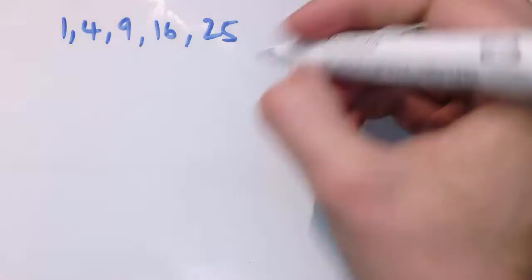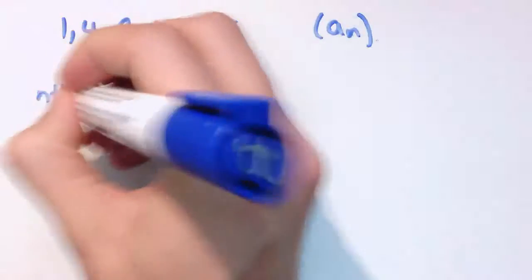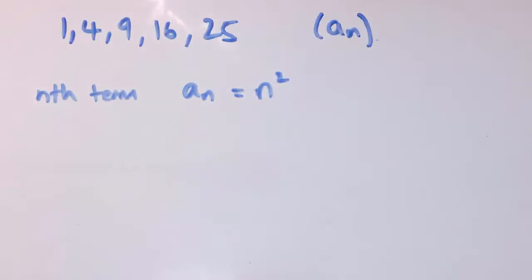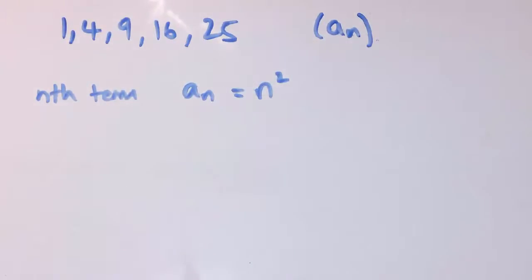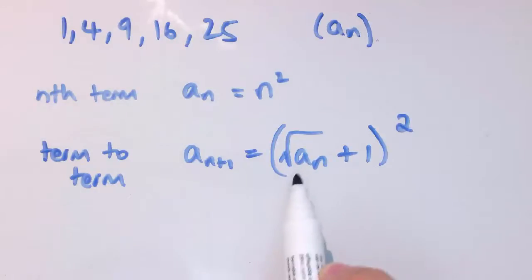Here's another sequence — let's call it an. This is just the square numbers: 1, 4, 9, 16, 25. It's really easy to write down the nth term definition: an equals n squared. This is often the case — it's much easier to write this definition than to find a term-to-term definition. There are ways of doing it but it's much harder. For example, one term-to-term definition is: a n plus 1 equals the square root of an, then add 1, and then square.